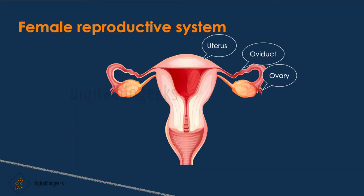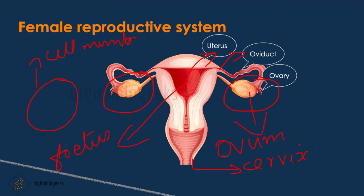The female reproductive system includes two ovaries, oviduct, and uterus. From the ovary, the ovum is produced. The female hormones like estrogen and progesterone are also produced from the ovary. Either ovary produces one ovum every month. The fetus develops inside the uterus. The narrow area is called the cervix. An ovum contains a cell membrane, a nucleus, and cytoplasm inside.